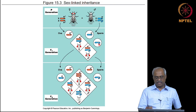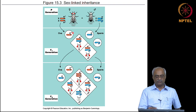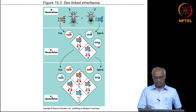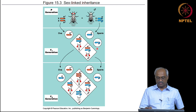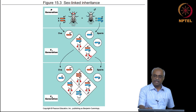When gametes form, the male produces Y-bearing sperm and X-bearing sperm in equal halves. The female produces eggs all carrying one X. In fertilization, females receive one wild-type copy from the female parent, so F1 females have red eyes. F1 males inherit the X chromosome from the female parent and therefore also have red eyes in the first generation.